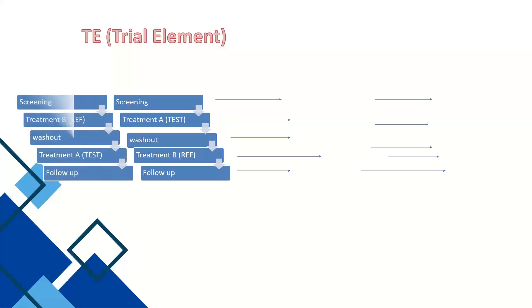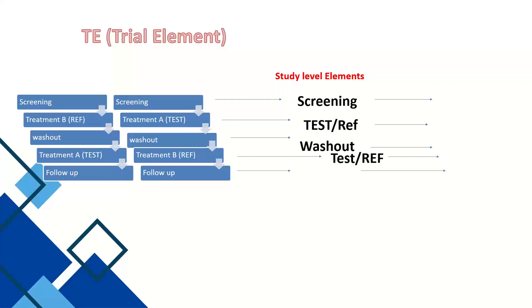Here you can see two subjects: one takes Treatment B first then A, the other takes A then B. The study-level elements are: first, Screening; then Test or Reference (whichever applies); then Washout; then the other drug; then Follow-up. We need to specify drug names — placebo, active, test, or reference. These are the study-level elements. At the overall trial level, these elements are called Epochs.